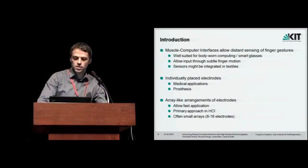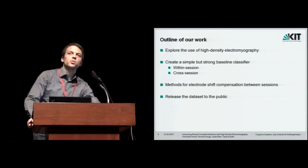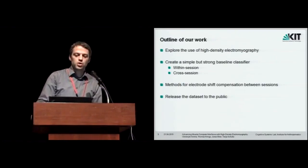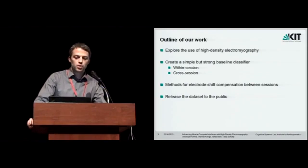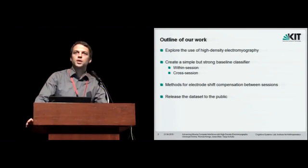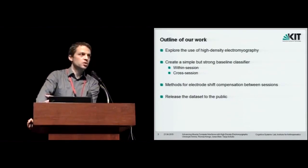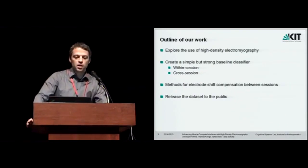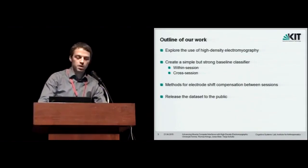That allows fast application or detachment and is the primary approach used in HCI applications. Usually small arrays are used with 8 to 16 electrodes. So the outline of our work: we explore the use of high density electromyography, which is basically taking this array approach to the next level by using an array with a large number of electrodes. We create a simple but strong baseline classification evaluated in within and cross session context, showed two methods to cope with the electrode shift, and finally we also release the data set to the public.